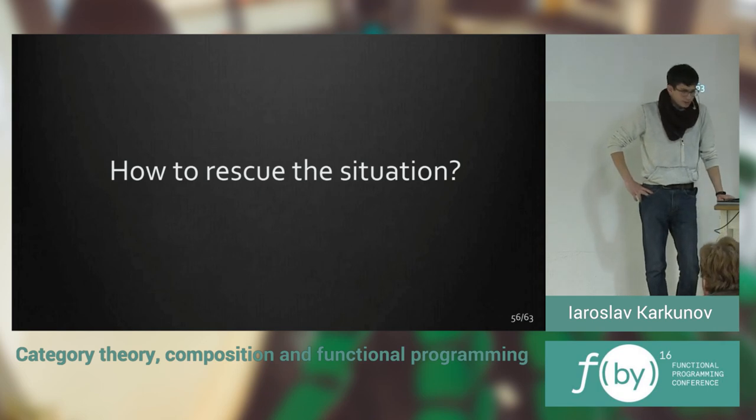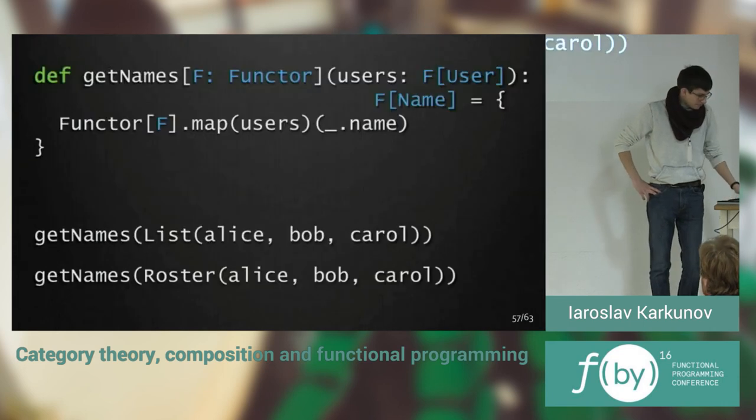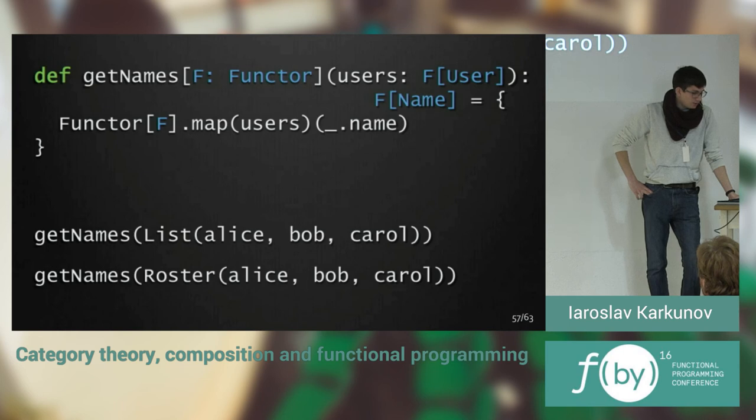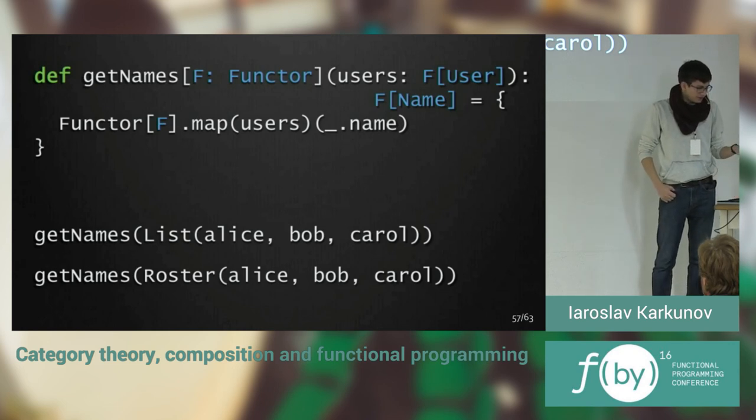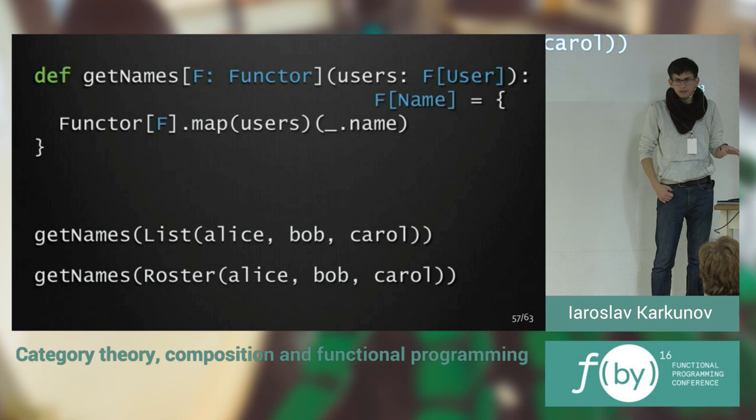Actually, that is where the functor could save us. As you can see, we can just define the function getNames on the functor argument, and just return the functor with a name type from that. So functor is a trait which only has map inside of it, and you could do nothing with that. You could just map. That's all.